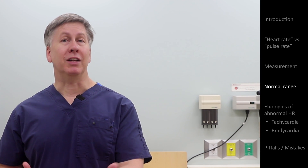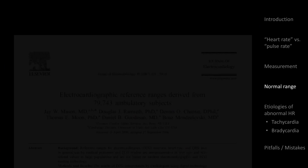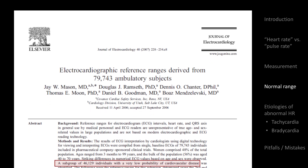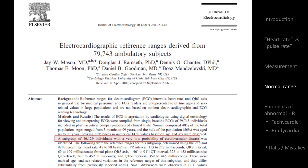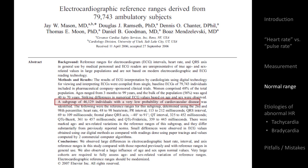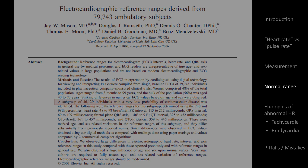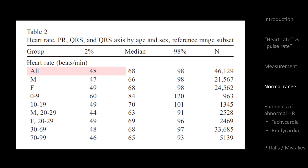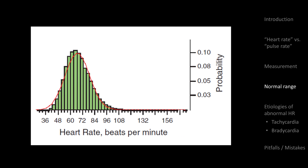Don't believe me? Consider some evidence. The largest relevant direct study was one from 2007 that looked at ECGs from 46,000 adults who had been categorized as having a low probability of cardiovascular disease. They found a median heart rate of 68 beats per minute with 96% of individuals falling between 48 and 98. Consider this histogram of heart rates in this population — just from eyeballing it, does 60 to 100 seem like the most accurate range for what's considered normal?